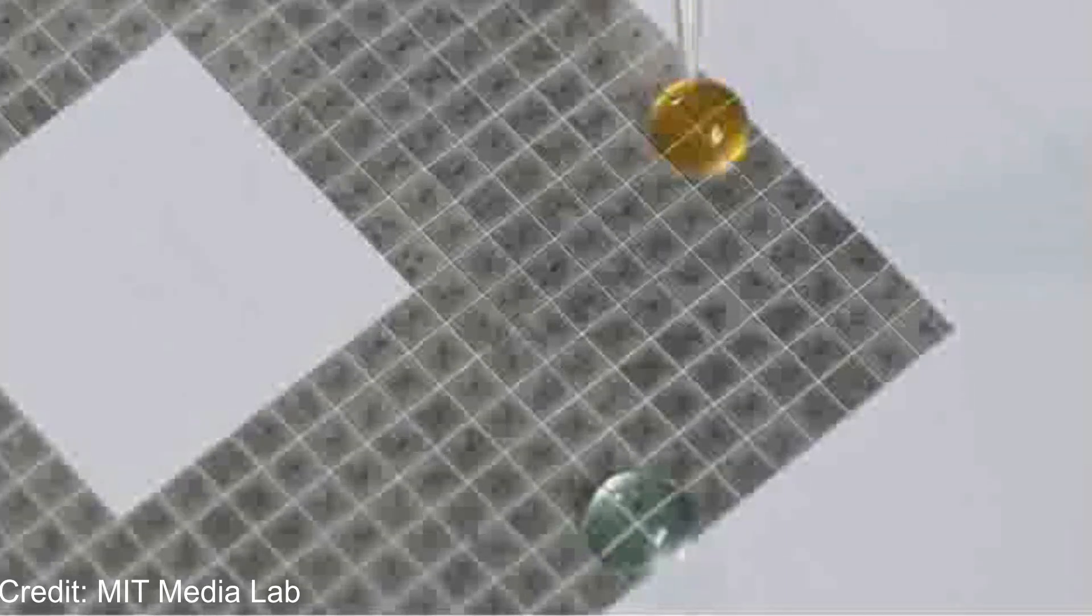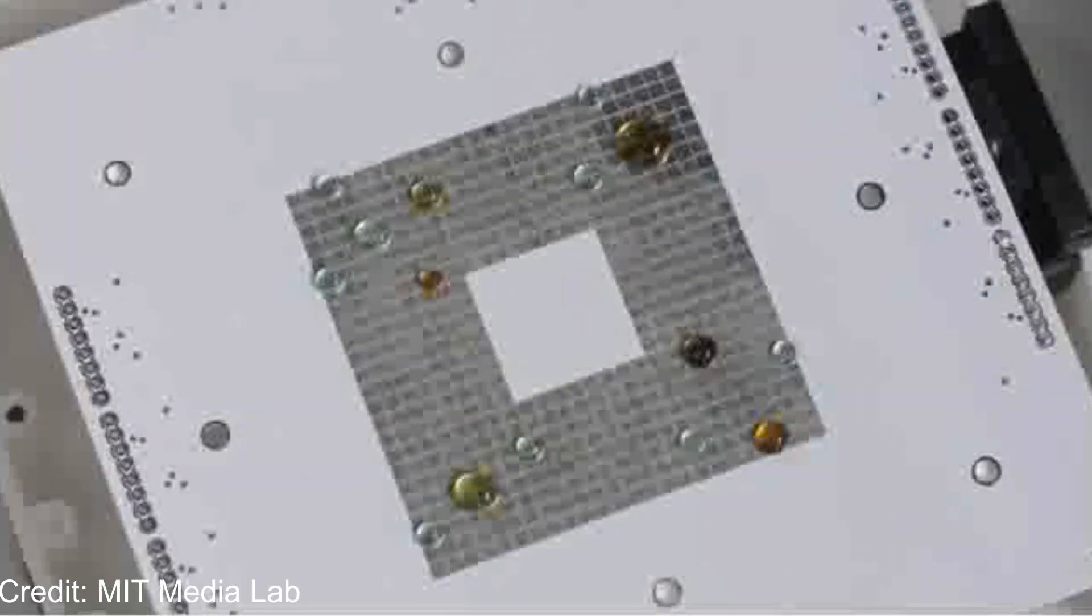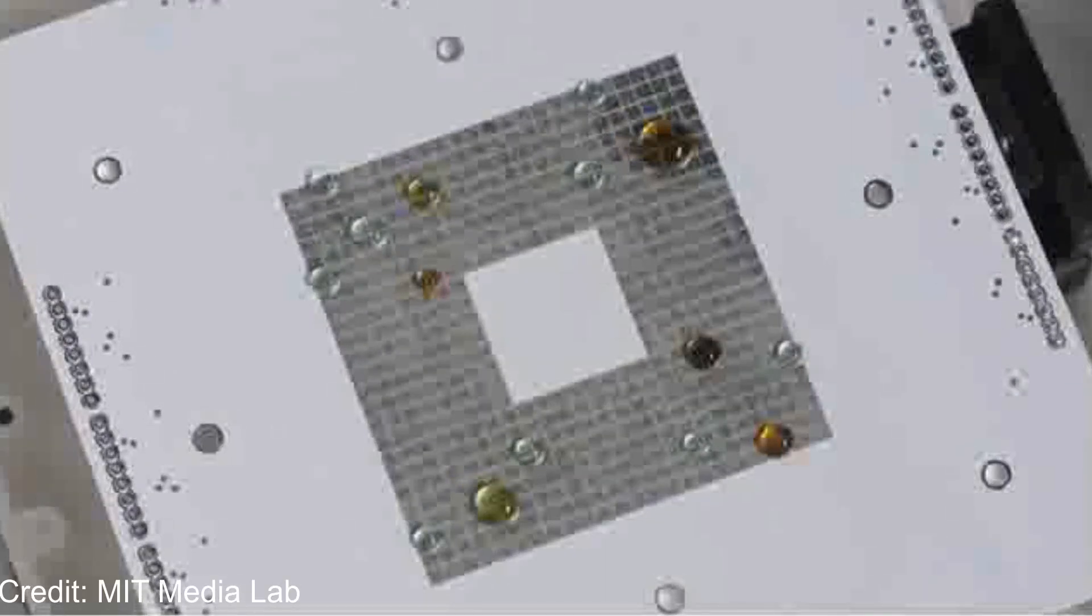That's a fancy term to talk about how hard it is to get a droplet to move once it's at rest. Some systems even use SLIPs. That stands for slippery, liquid-infused, porous surfaces. Basically, a lubricating liquid between the solid surface and the droplet, enabling the droplet to glide as if it's on ice.